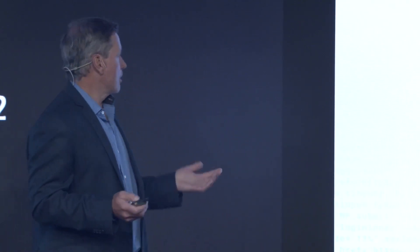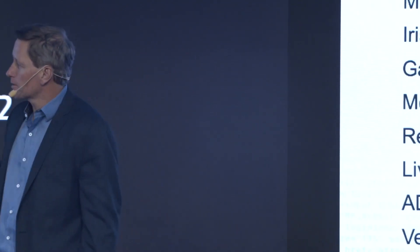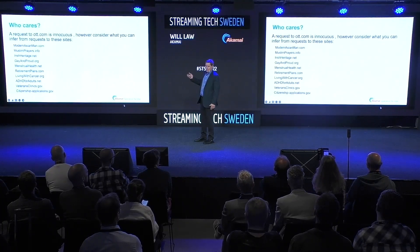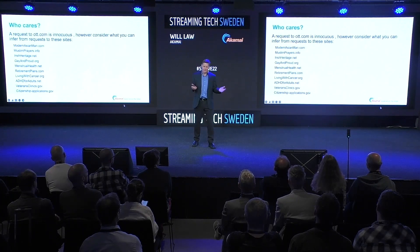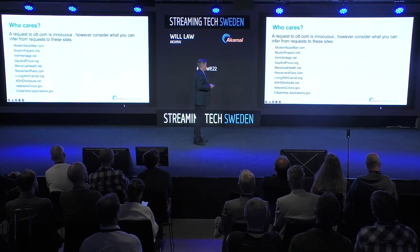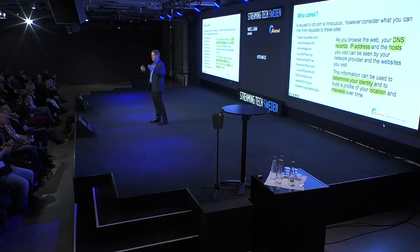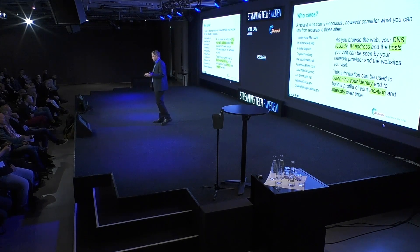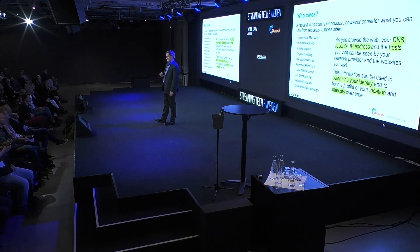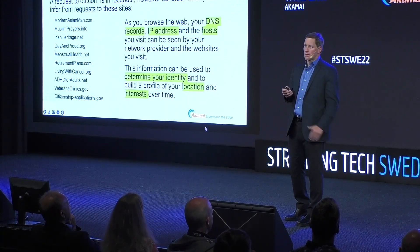Who cares? Is that a big invasion of privacy? Well, maybe to ott.com it isn't. But if you happen to go to one of these sites — I pick these sites because every one of them contravenes federally protected discrimination rules in the United States and probably in Europe as well — what happens is your DNS records, your IP address, and your hosts can be seen by your network provider. They're seen by the CDN that relays your information. And various entities can determine identity and location and your interests over time. And I think as individuals, our interests are certainly private to us.